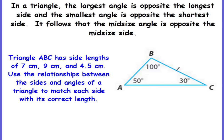I always like to start with the largest. The largest angle is going to be angle B at 100 degrees. I need to know the side that is opposite this angle — it's the side that does not touch the angle. Sides AB and BC both touch angle B, but side AC does not. So AC is the side opposite angle B. Since angle B is the largest angle, we want the largest side length here, which is 9 cm.